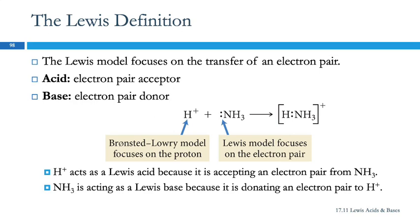Bronsted-Lowry model was looking at the transfer of a proton. So here we have the acid accepting an electron pair. The Bronsted-Lowry is focusing on the proton. The Lewis model is focusing on this electron pair. The base will be the electron pair donor.